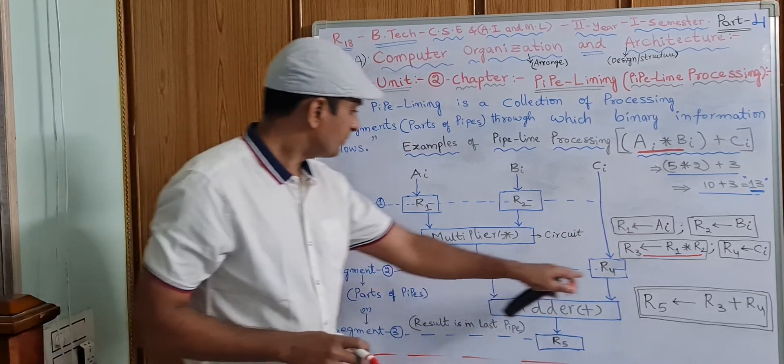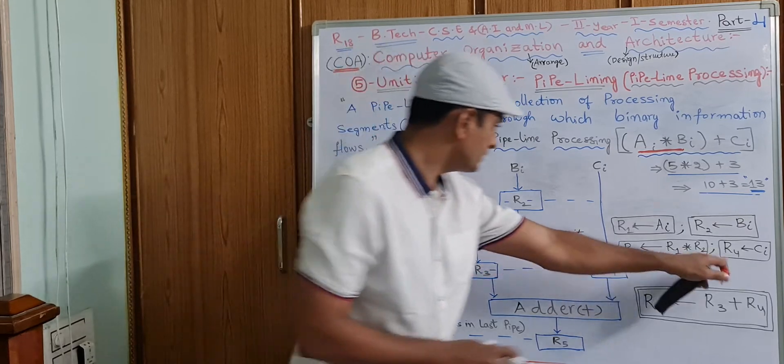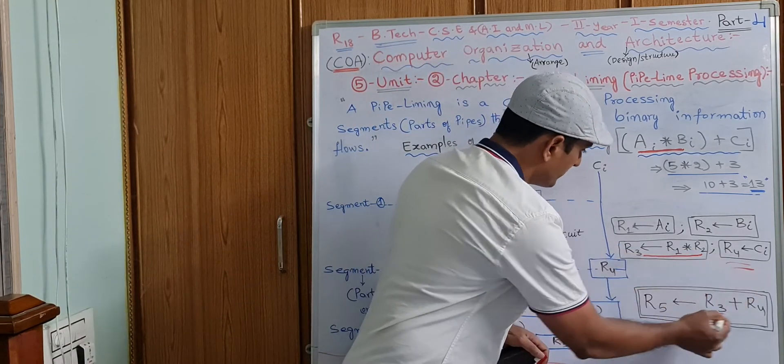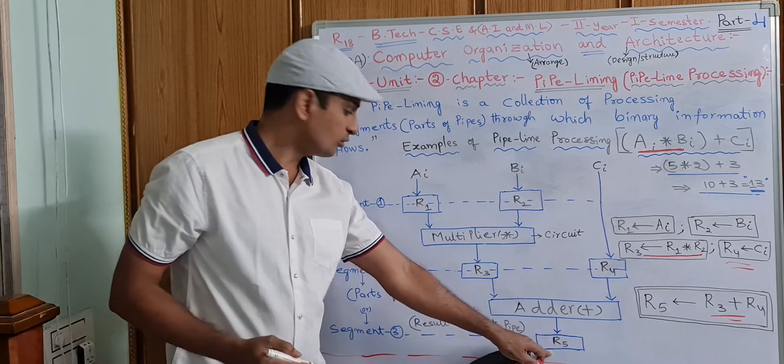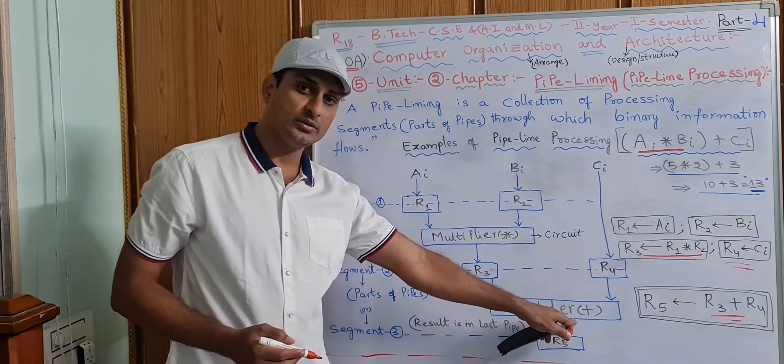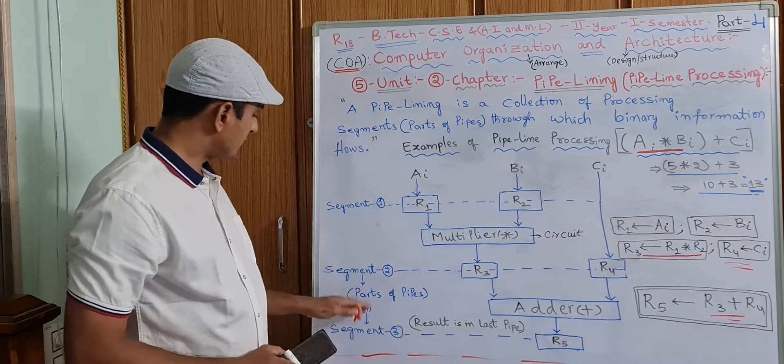And R3 plus R4, this will be done here in the R5 register through this adder circuit, adder gate. That is segment 3.